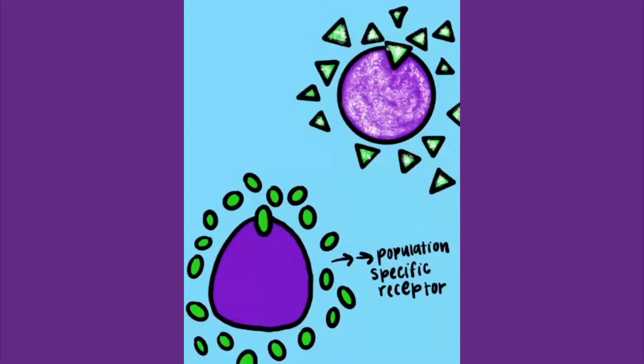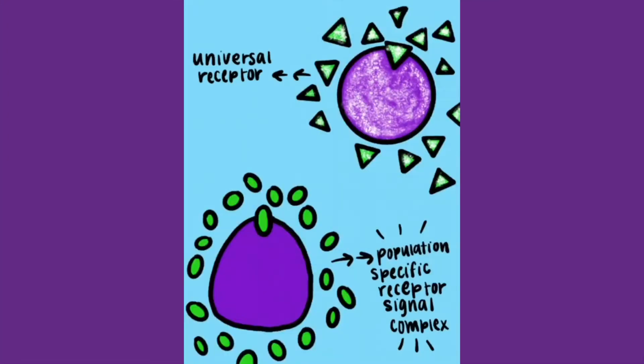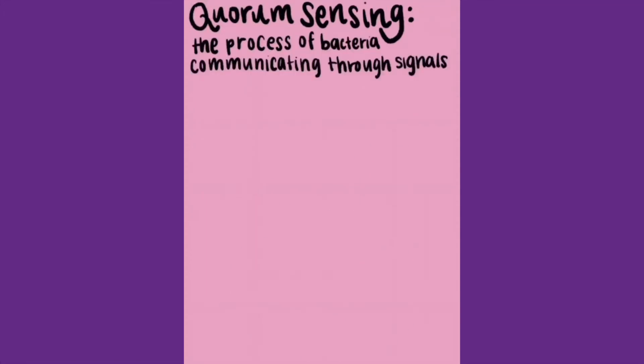Bacteria have two types of receptors: one for signals specific to their population, and one for a universal signal. This messaging system is used by the bacteria to count their population density — how many bacteria are there relative to the host. Once a certain population density is achieved, the bacteria will coordinate and initiate a group response, such as virulence. This process of communicating through signals in bacteria is known as quorum sensing.